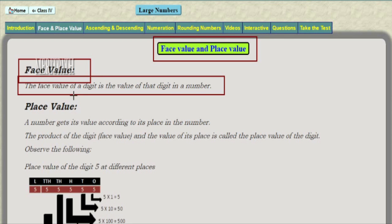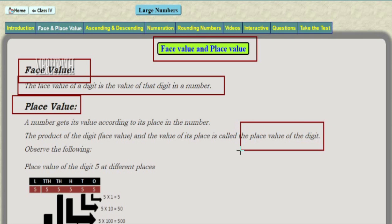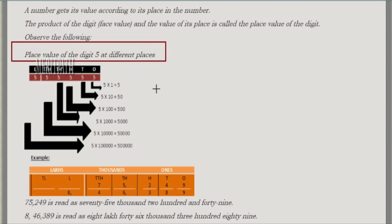Now let's see place value. A number gets its value according to its place in the number. The place value is the product of the digit's face value and the value of its position. For example, let's take 555555. The first 5 is in ones place, the second 5 is in tens place, the third is in hundreds place, the fourth is in thousands place, and the fifth is in ten thousands place.